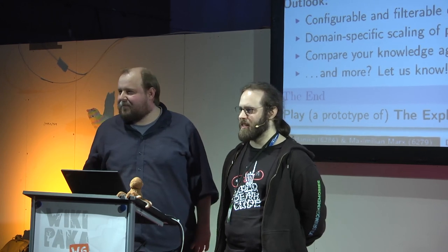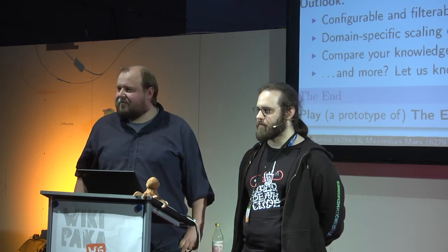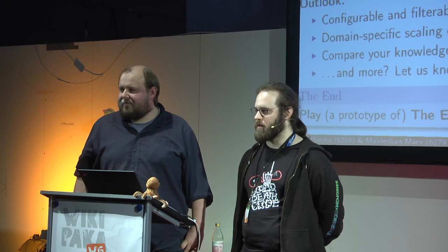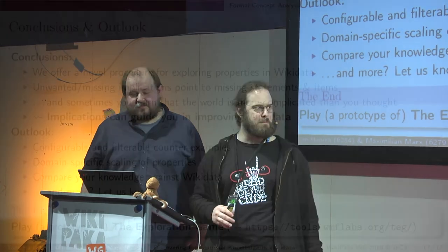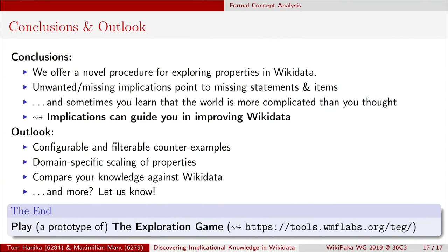Audience question: Are you planning to allow adding data through the tool? For example, if there are 25 Nobel laureates missing a Nobel laureate ID, could there be an interface to Google and add that ID? Answer: Yes — that's partly behind the configurable counterexamples feature. We probably won't have an explicit interface but will interface with another Wikidata tool, likely something that gives you quick statements. Adding data is definitely on the roadmap.